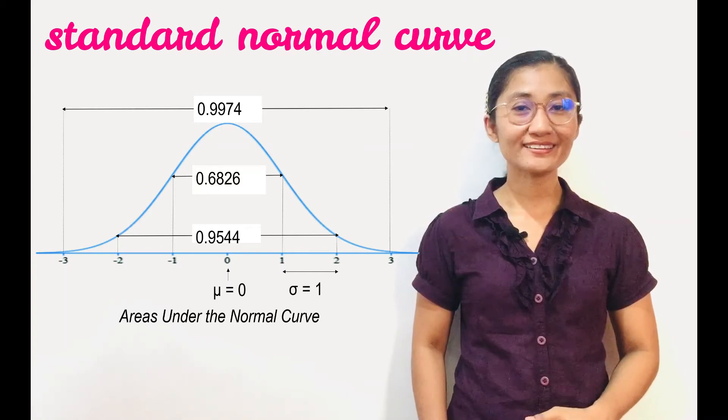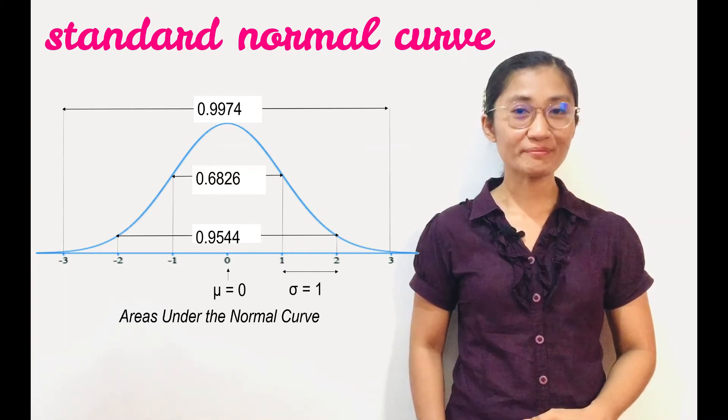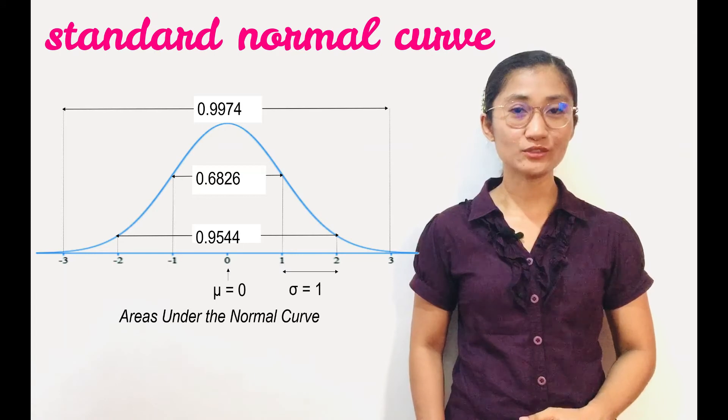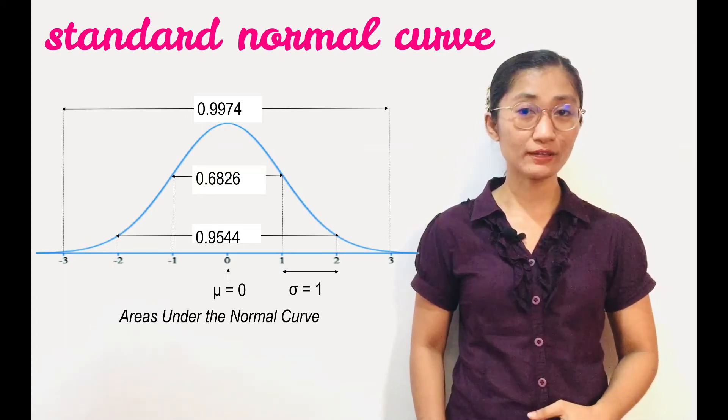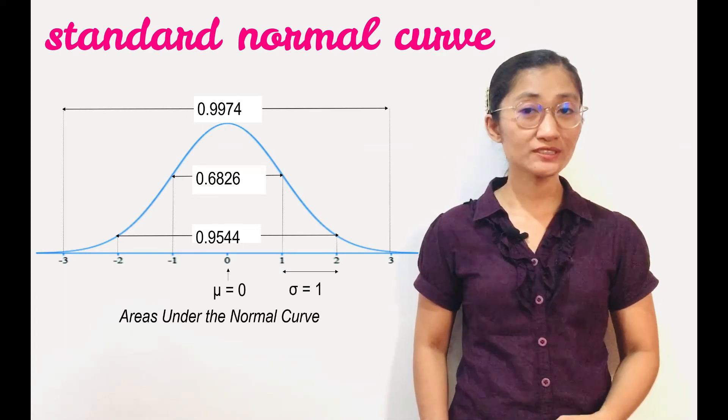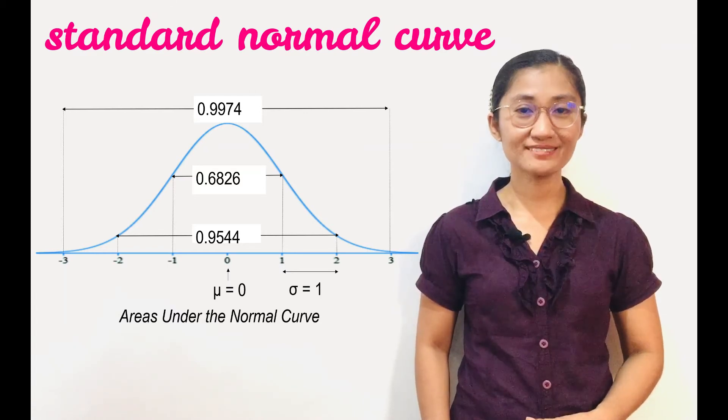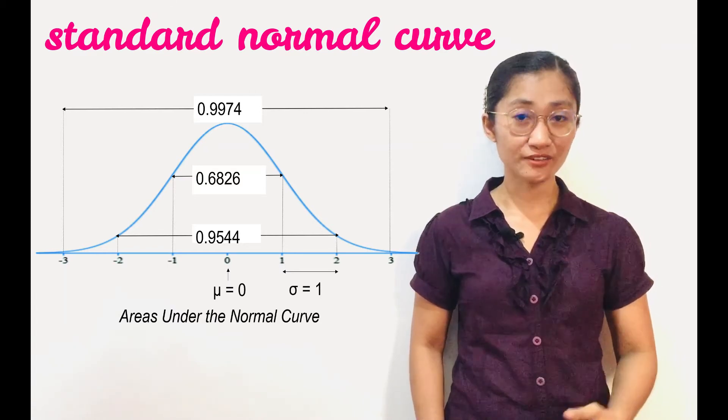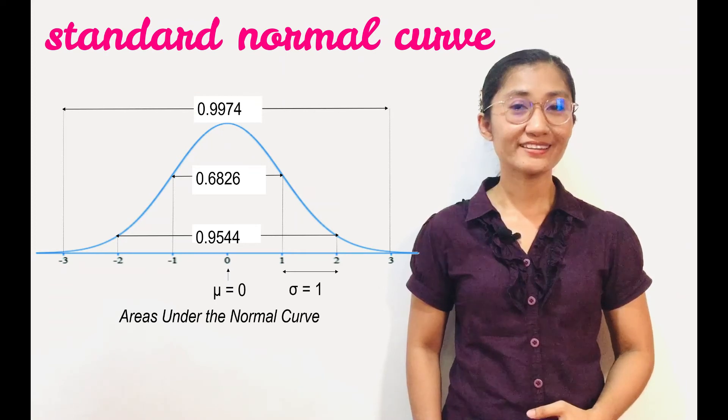It further shows that the area under the curve from negative 2 to positive 2, or from 2 standard deviations below the mean to 2 standard deviations above the mean, is 0.9544.